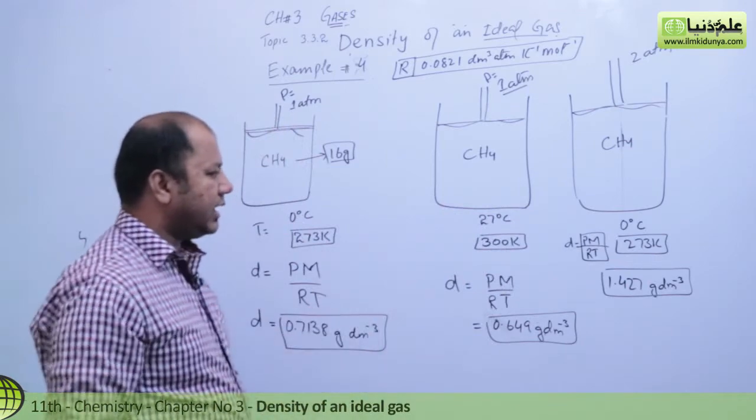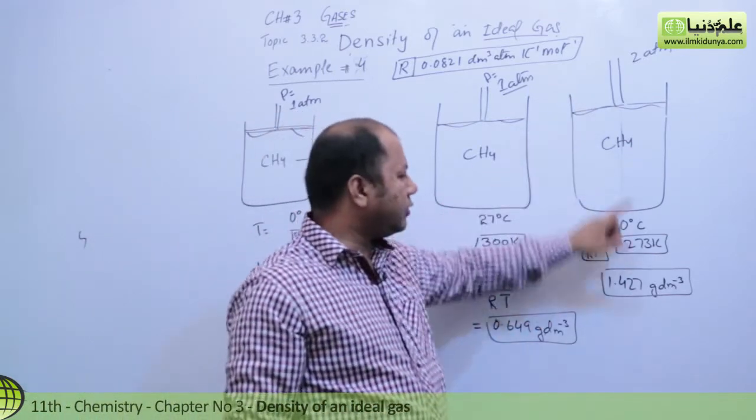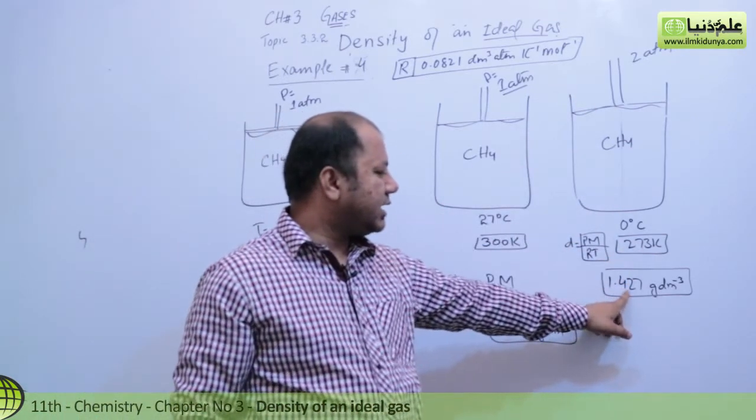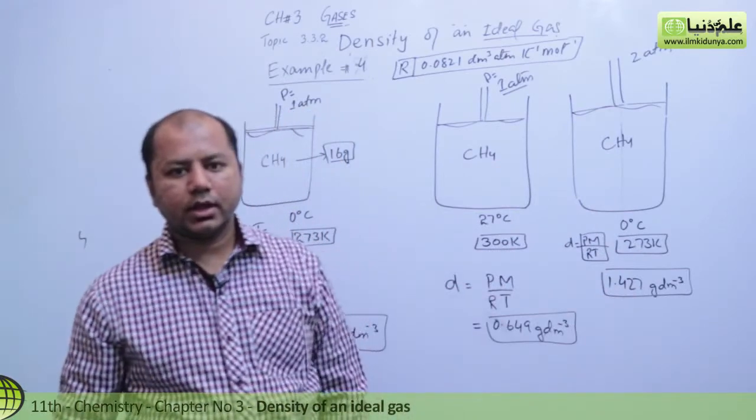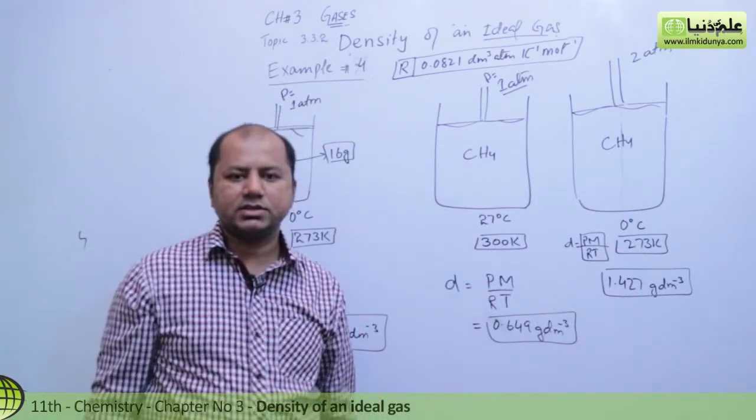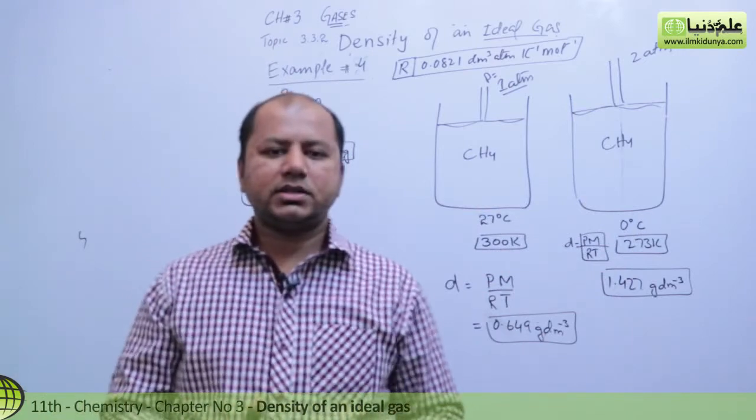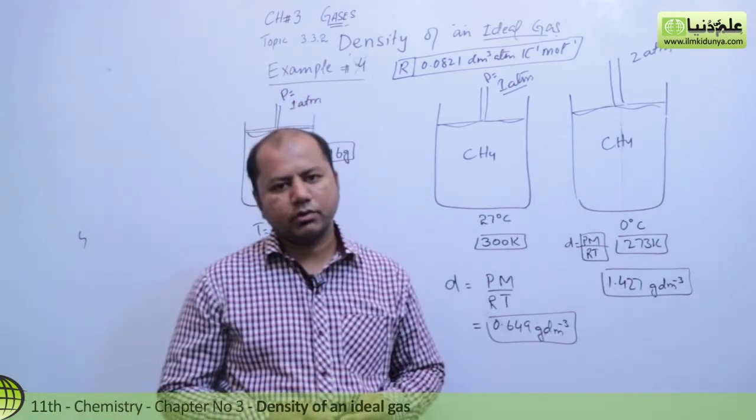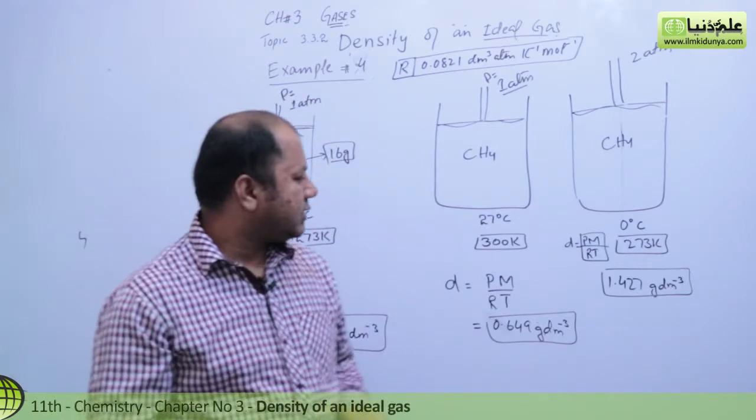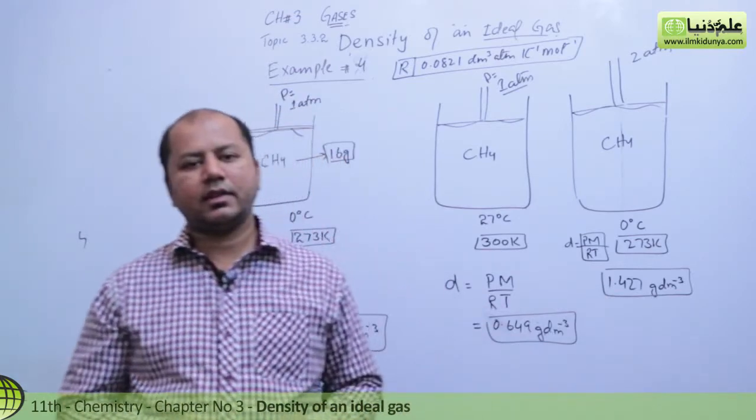After that, you just place values and get the answer. See here, pressure increased a little bit. When pressure increases, density also increases. Because when you increase pressure, particles come closer together, and when particles come closer, definitely their mass per volume increases.